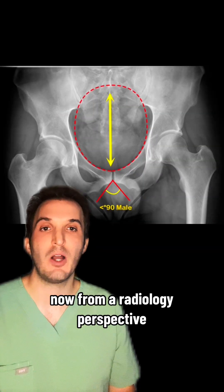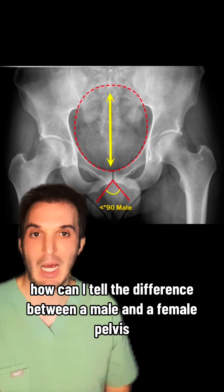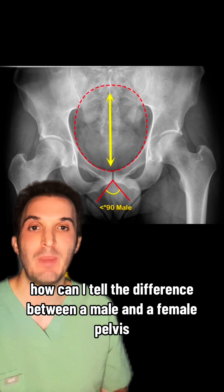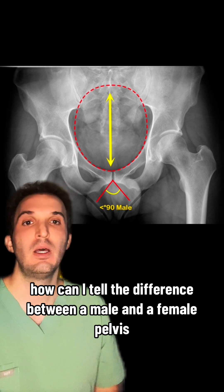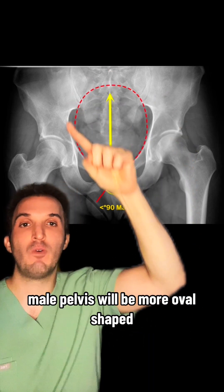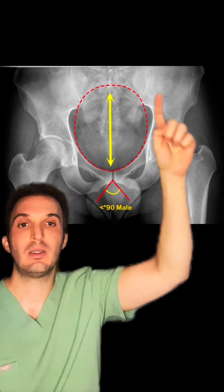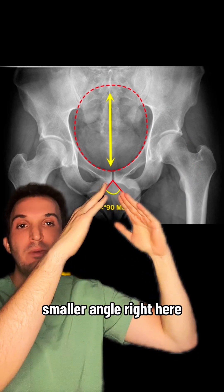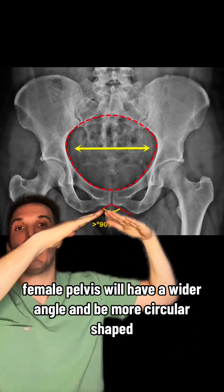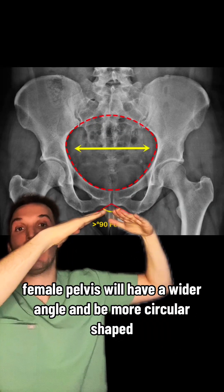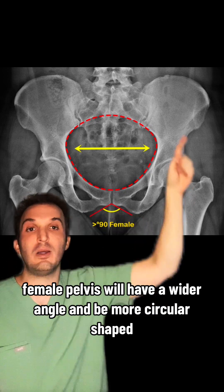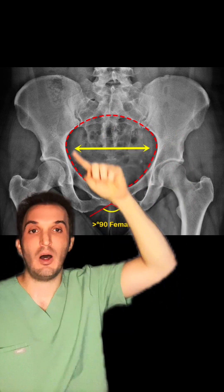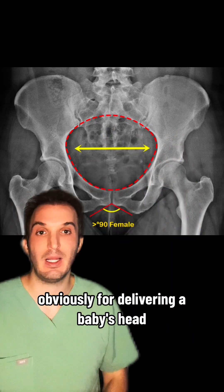From a radiology perspective, how can I tell the difference between a male and a female pelvis? The male pelvis will be more oval shaped with a smaller angle here. The female pelvis will have a wider angle and be more circular shaped, obviously for delivering a baby's head.